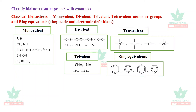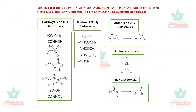Divalent bioisosteres: C=S, C=O, C=NH, and C=C can be exchanged to enhance druggable properties of the lead compound. Tetravalent bioisosteres include quaternary nitrogen, carbon, phosphorus, and arsenium. Trivalent bioisosteres include CH, N, phosphorus, and arsenic. Ring equivalents: benzene can be substituted with thiophene or purine — these are all called bioisosteres.